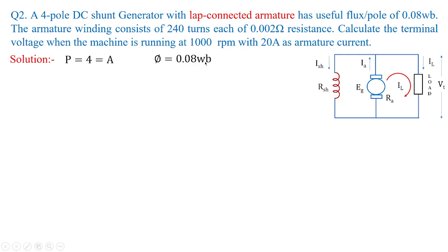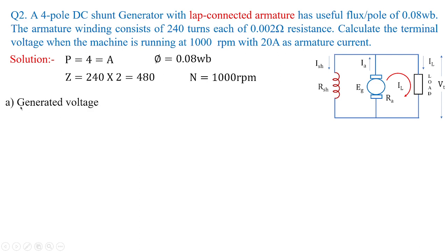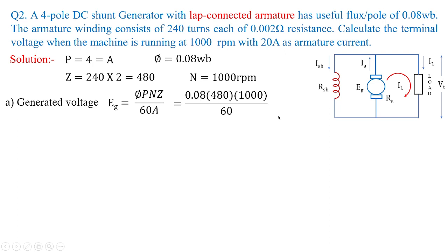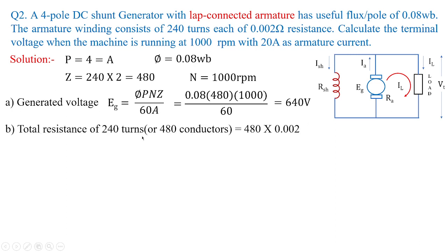The flux value is given as 0.08 webers. The number of conductors Z: 240 turns multiplied by 2 gives 480 conductors. Speed is 1000 rpm. The generated voltage formula is Eg = (P·φ·N·Z) / (60·A). Since P and A cancel out for lap connection, substituting the values of flux, conductors, and speed gives the generated voltage as 640 volts.